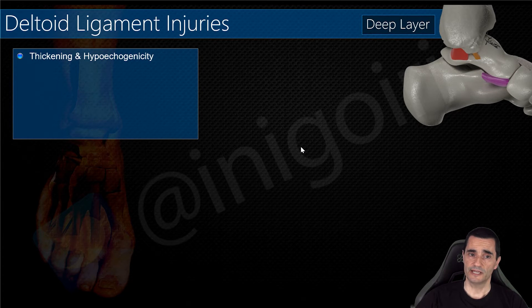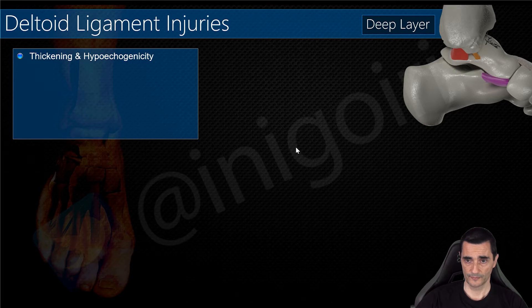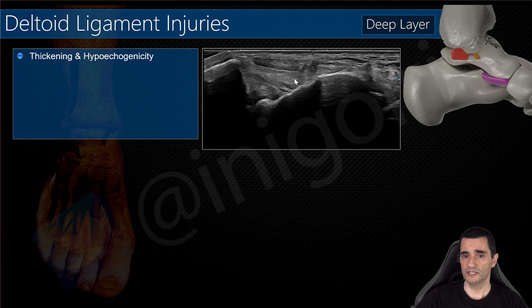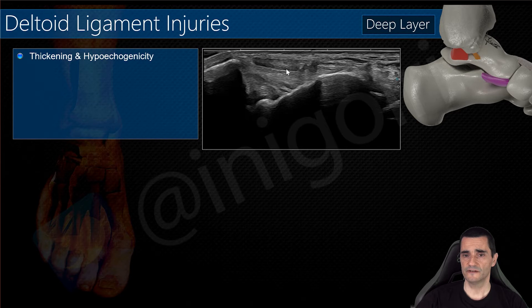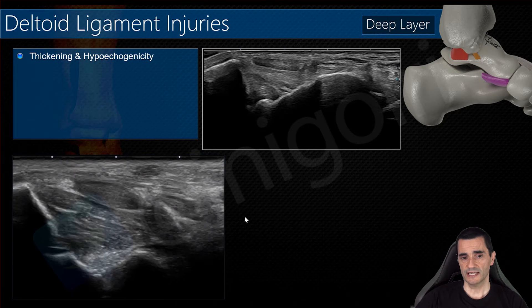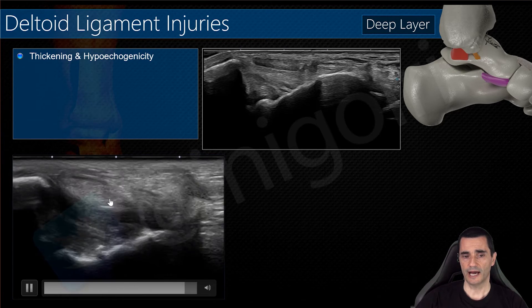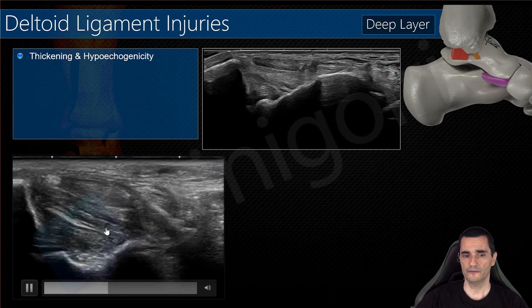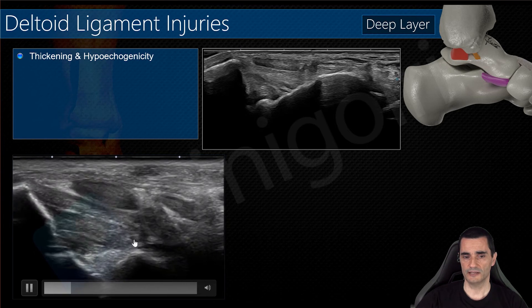When we have a ligamentary injury, we will find thickening and hypoechogenicity of the ligament. Looking at a normal ligament, you can see this fibrillar pattern in the posterior tibiotelar ligament and its echogenicity is very similar to the surrounding structures. Always perform dorsiflexion of the ankle to obtain this image. In this case, you can notice the thickening and hypoechogenicity of the ligament — this is the posterior tibiotelar ligament.